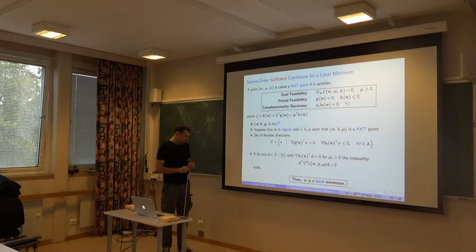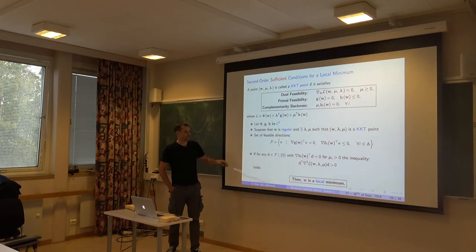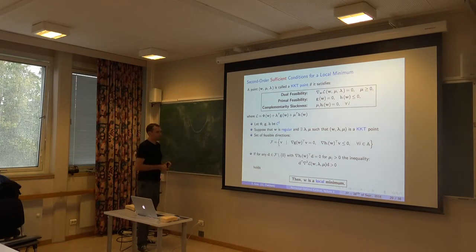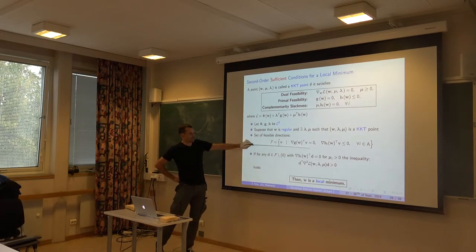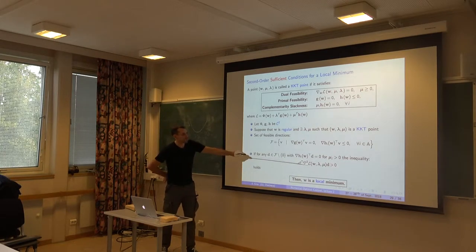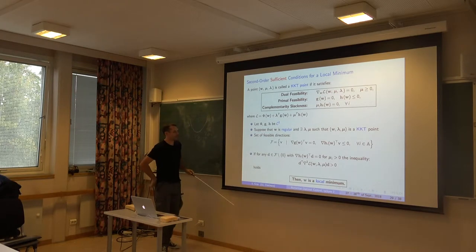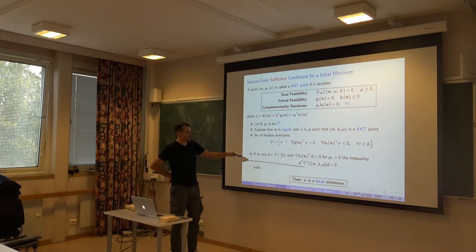The statement about second order sufficient conditions is that in the set F, there is no direction for which the Hessian of the Lagrange function is negative. In the unconstrained case, the set F would be any direction you want, and we recover the classic statement that you need the Hessian of the cost function to be positive definite. If we didn't have constraints, the Lagrange function would simply be the cost function.